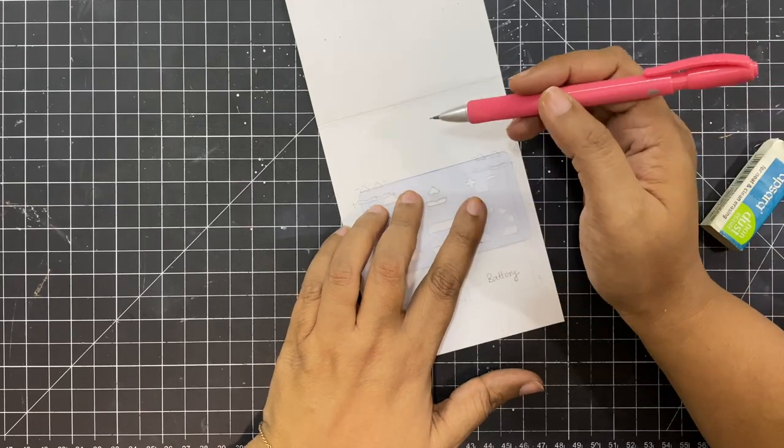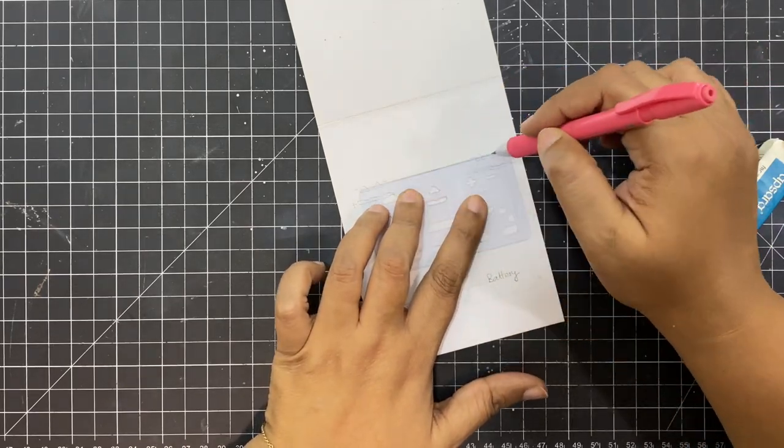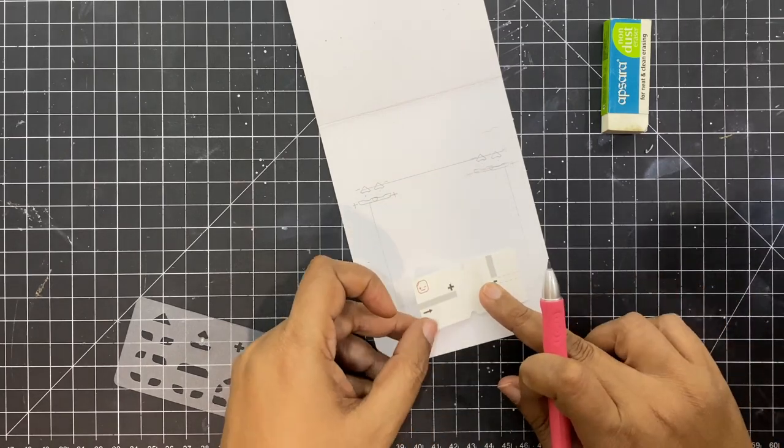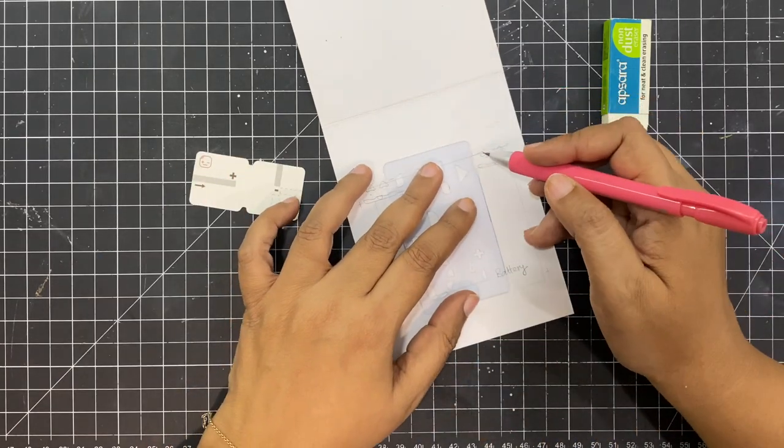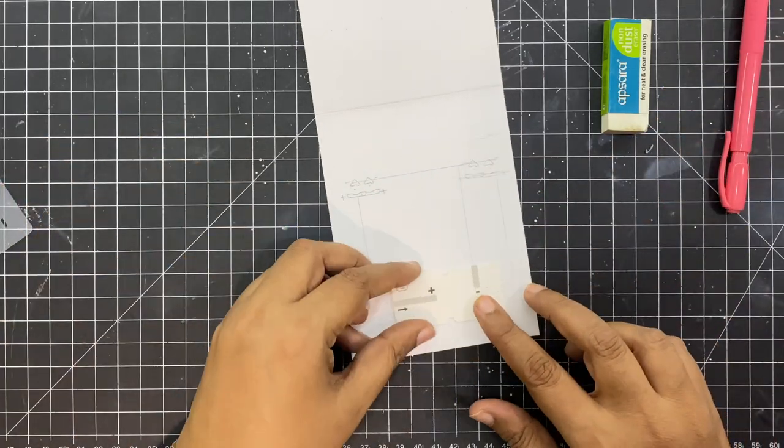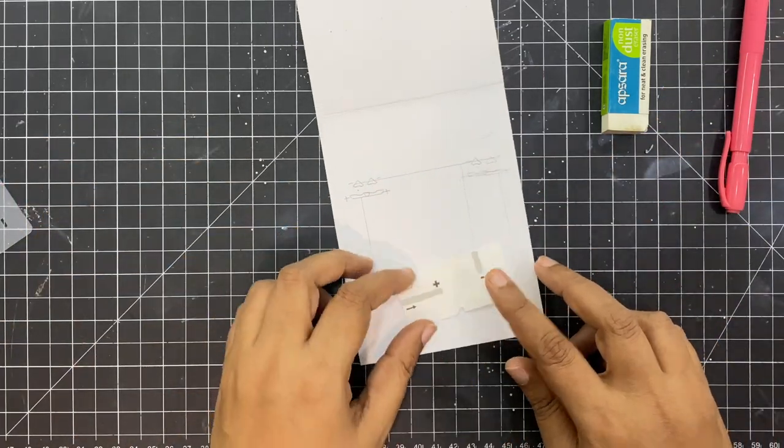You would never want them to touch, otherwise the circuit would not work. A pencil rough line always helps to make sure that the circuit is proper.